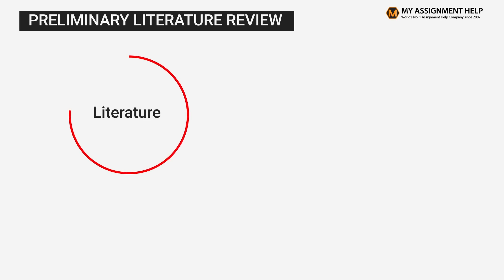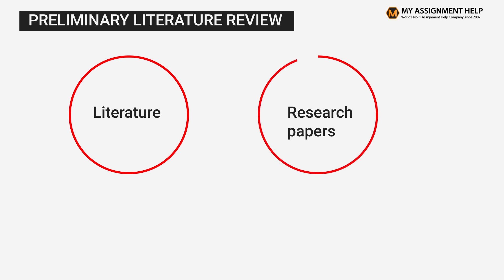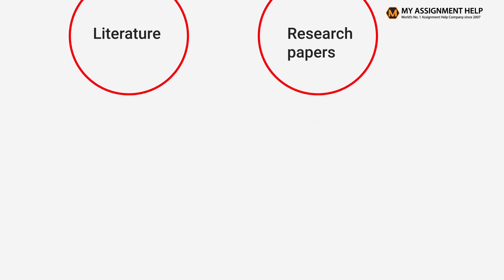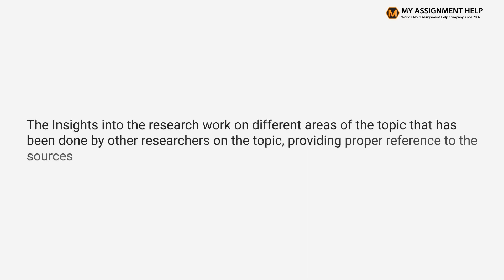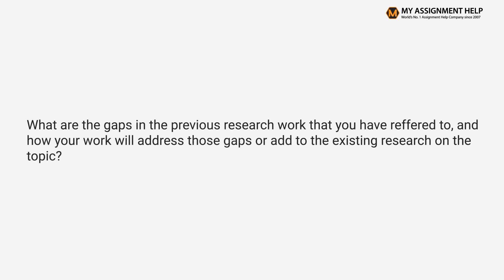Preliminary Literature Review. The Preliminary Literature Review provides a summary of all the literature related to the topic and field you have gone through. It is generally a summary of previous research papers in the concerned field. Here, you need to state that you have thoroughly gone through pre-existent research works and your work is unique or different from pre-existent findings. It should also provide insights into research done by other researchers with proper references, and identify gaps in previous research that your work will address.